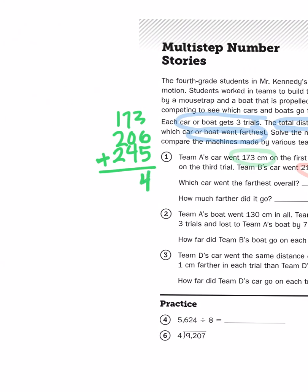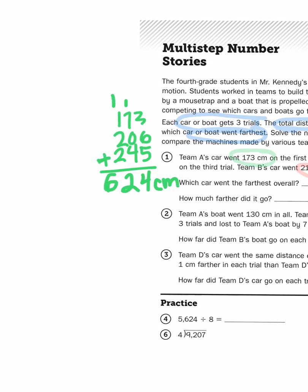I'm going to carry that 10. 10 plus 7 is 70 is 80, 80 plus 40 is 120. So, I'm going to put the 2 down here, carry that 100. Then 1 plus 1 is 2, 2 plus 2 is 4, 4 plus 2 is 6. So, the total here is 624 centimeters. That's Team A's car.